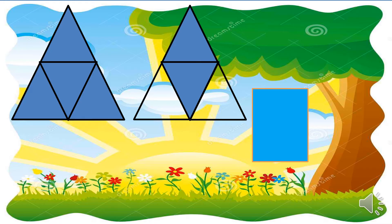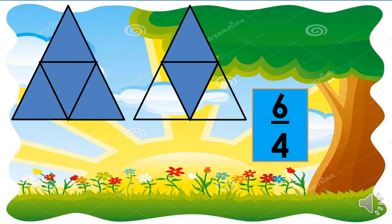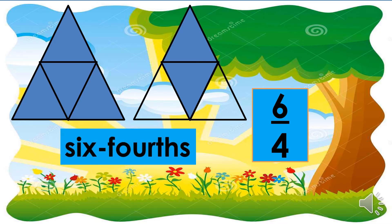There are six shaded parts in these two triangles, so six should be written as the numerator. The denominator is four. The fraction symbol for this is six-fourths. Here is the fraction word: six-fourths.